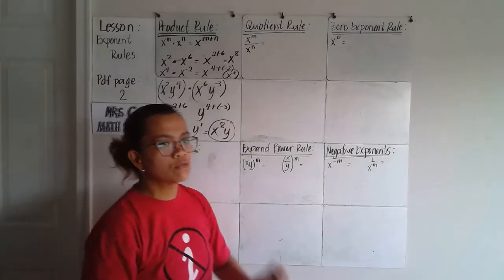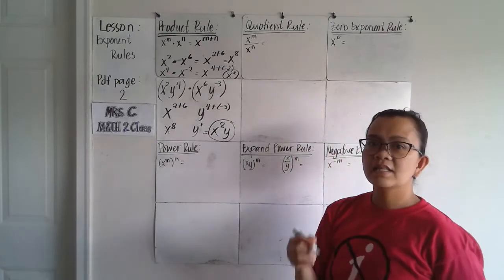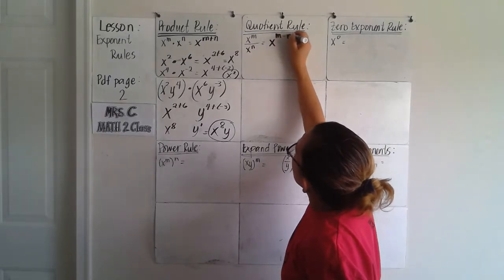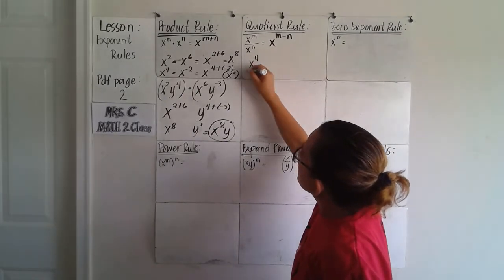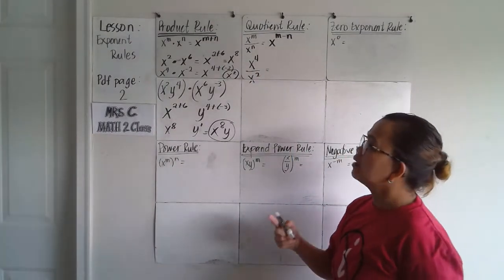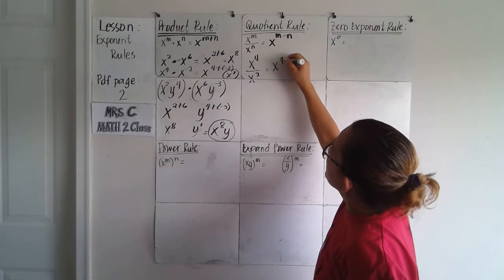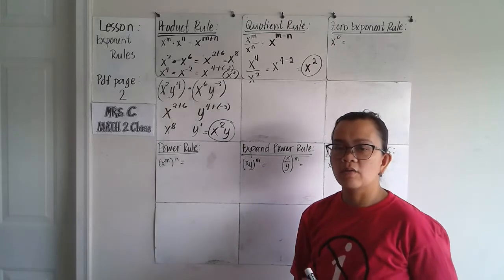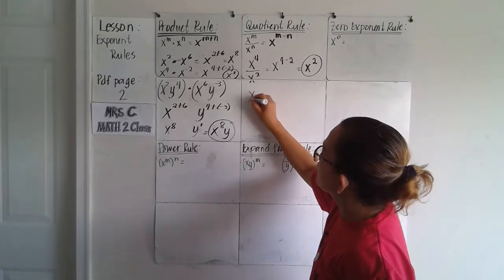Next, quotient rule. To divide with the same base, write the base and subtract the exponent. Example: x raised to 4 over x raised to 2. Since 4 is greater than 2, I would put the larger exponent on the numerator, so x to the 4th minus 2 equals x raised to positive 2.